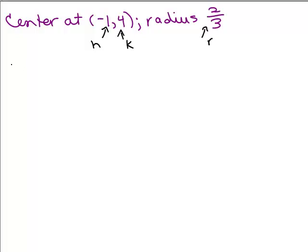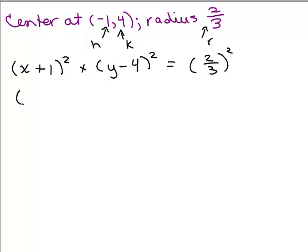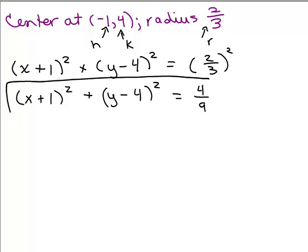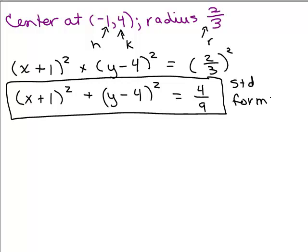So, we put it in the formula. Now, remember, if we're going to do X minus H, it'll be X plus 1 because it'd be minus a negative 1 squared plus Y minus 4 squared equals 2 thirds squared. So, the only thing I would do to finish this off in standard form is to square 2 thirds and write 4 ninths. And here we have the standard form.